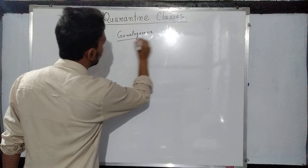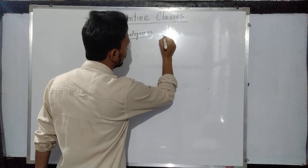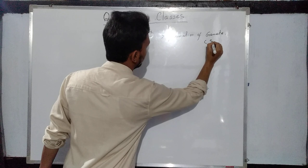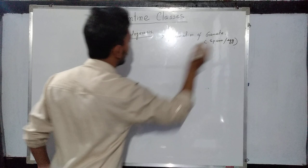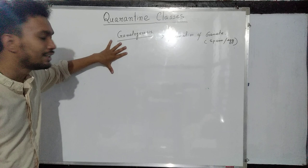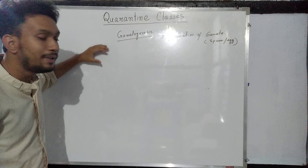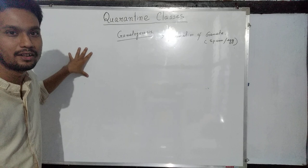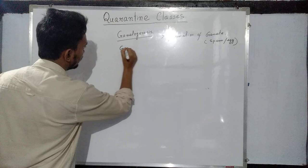What do you mean by gametogenesis? Simply, it's the formation of gamete. Gamete means either sperm or egg. In other words, gametogenesis is a process by which the germinal epithelium of the gonads undergoes meiosis and forms the sperm or egg.